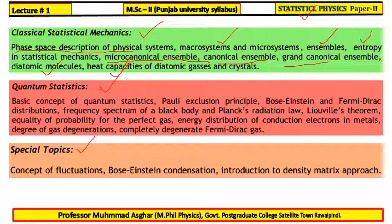In Quantum Statistics, we will start from the basics of Quantum Statistics. We will study the Pauli Exclusion Principle and both the Bose-Einstein and Fermi-Dirac statistical distributions.